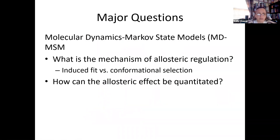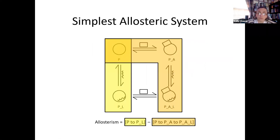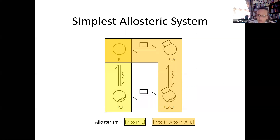The major questions are: what are the mechanisms of allosteric regulation — induced fit and conformational selection — and how can the allosteric effect be quantitated, which would be very difficult to ascertain from experimental measures alone. We can use molecular dynamics simulation combined with machine learning using Markov state models to look at this question. We've picked the PDZ system because it is one of the smallest allosteric proteins and can be cut down into simple representations.